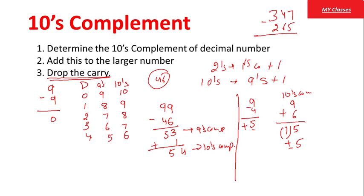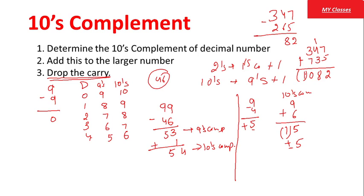Another example: 347 minus 265। Regular method से answer 82। 10's Complement के through: 265 का 10's complement — 9-5=4, plus 1=5; 9-6=3; 9-2=7 → 735। 347 plus 735: 7+5=12 (carry 1), 4+3+1=8, 3+7=10 (carry 1)। Carry आया, so carry को drop करेंगे — answer बन गया 082, यानी positive 82। Same pattern: अगर carry नहीं आता, तो result का फिर से complement निकालकर negative answer।